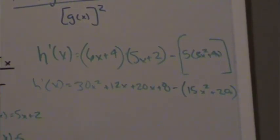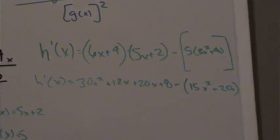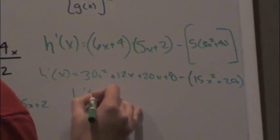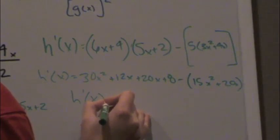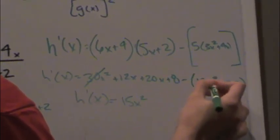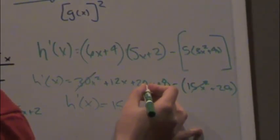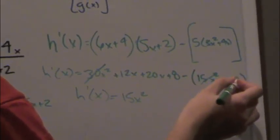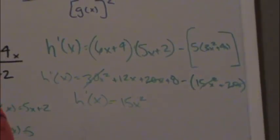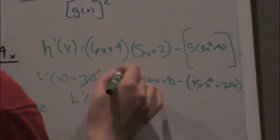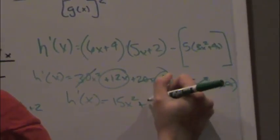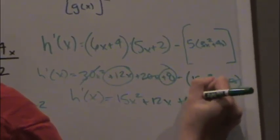Alright, so here we can combine like terms. 30x squared minus 15x squared would be 15x squared. 20x, if we're distributing the negative here it would be 20x minus 20x so we can subtract those from each other, and then we're left with 12x and 8 which don't have any more like terms to combine, so that's plus 12x plus 8.